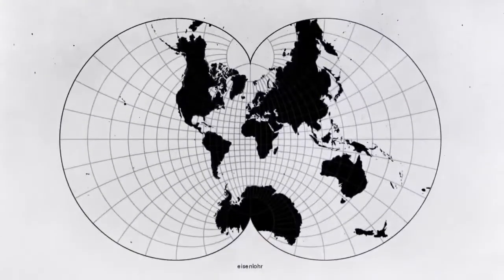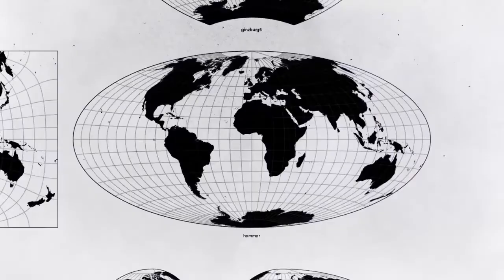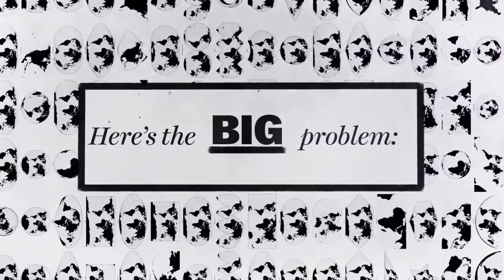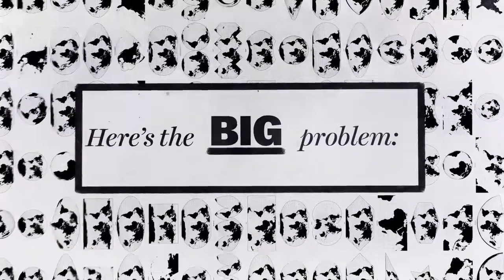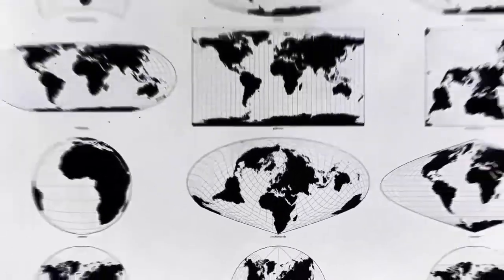The math used by map makers to project the globe will affect the way the map looks once it's all flattened out. And here's the big problem: every one of these projections comes with trade-offs in shape, distance, direction, and land area. Certain map projections can either be misleading or very helpful depending on what you're using them for.